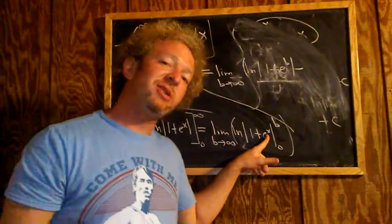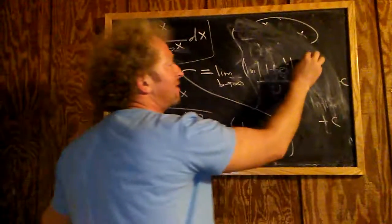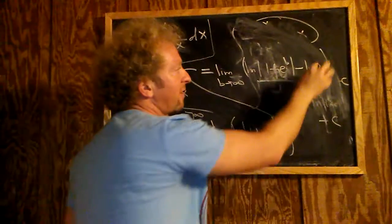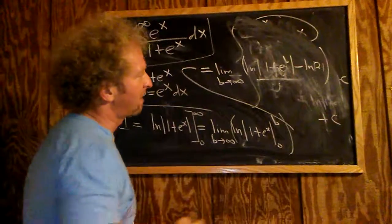When you plug in 0, you get e to the 0. e to the 0 is 1, so 1 plus 1 is 2. So you get minus ln 2. And I drop the absolute value sign because the absolute value of 2 is just 2. You can put it there, or you can drop it.